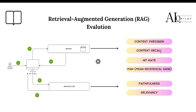For the retriever, there are four main metrics. If you are familiar with classical machine learning evaluation, we have precision and recall — but in the context of the RAG system, we name them context precision and context recall. We also have another metric called hit rate, and then MRR, or Mean Reciprocal Rank. These are the four metrics for the retriever part, plus faithfulness and relevancy for the generator part.